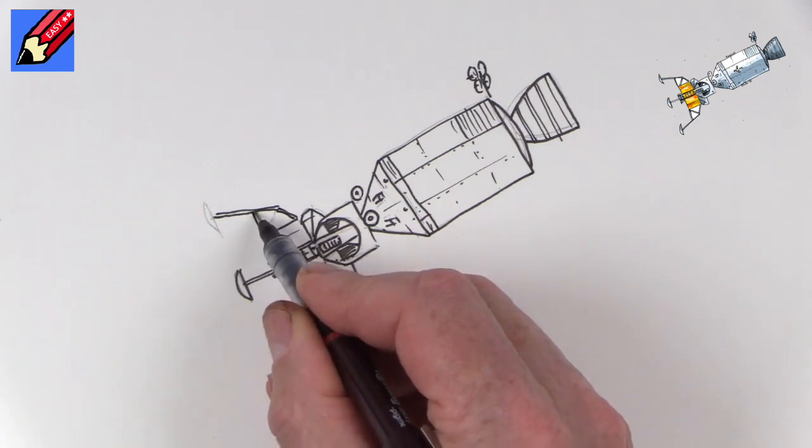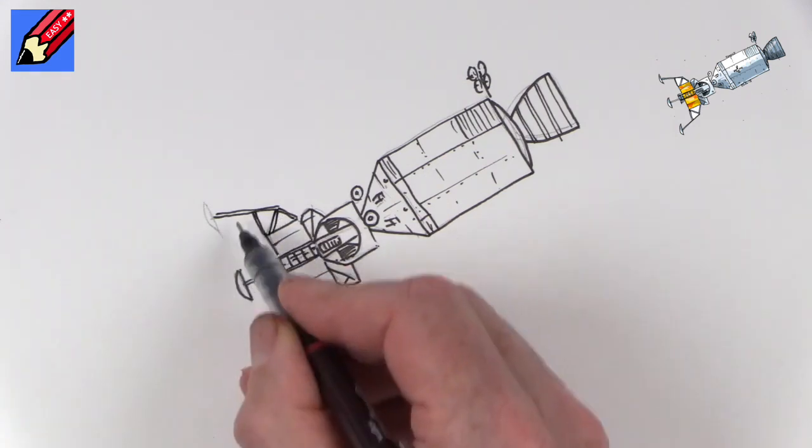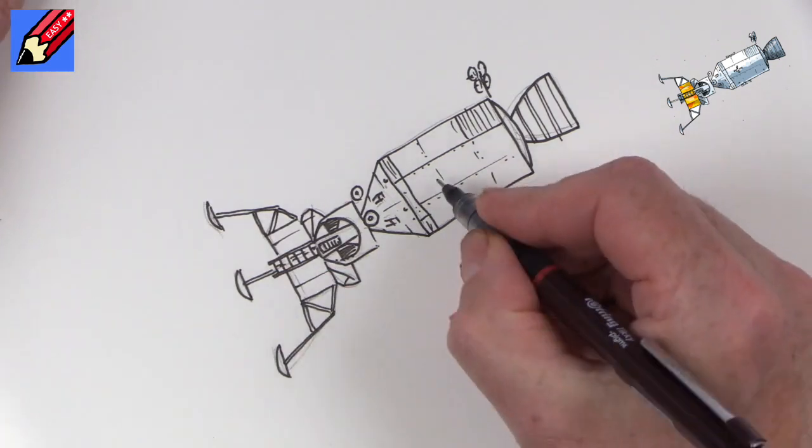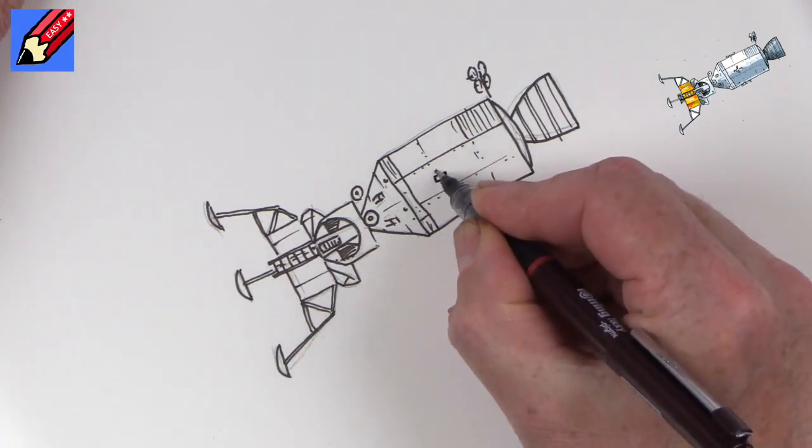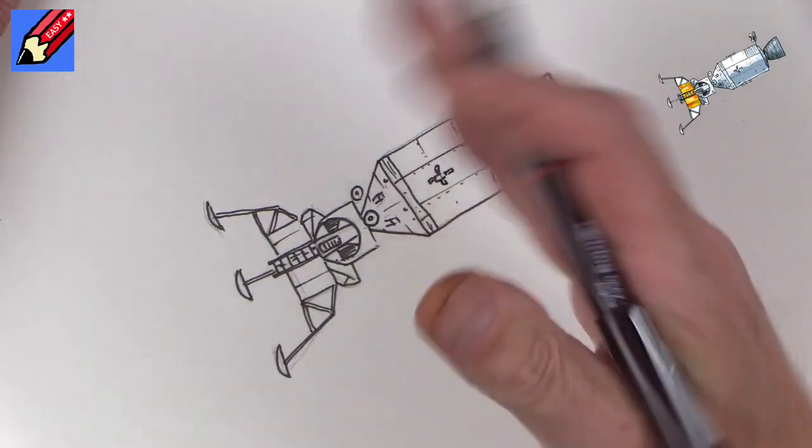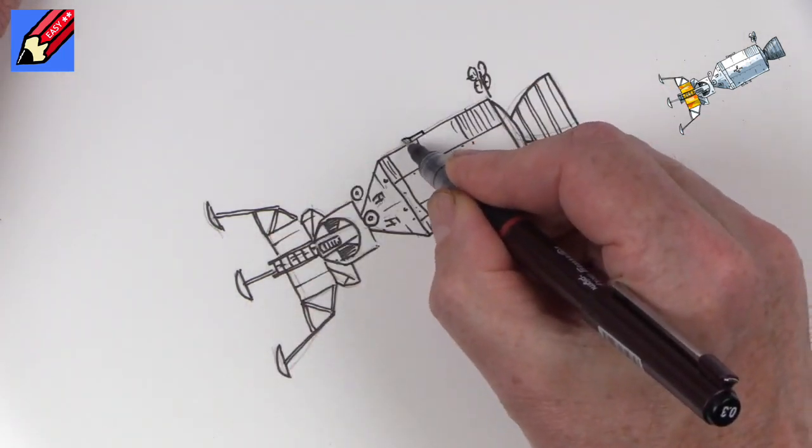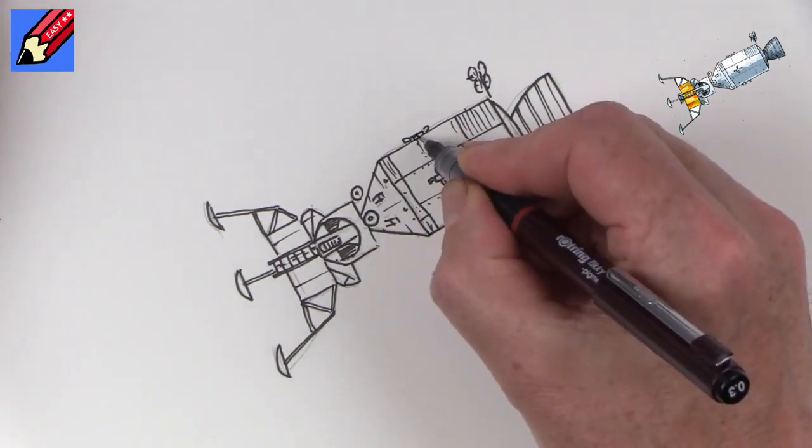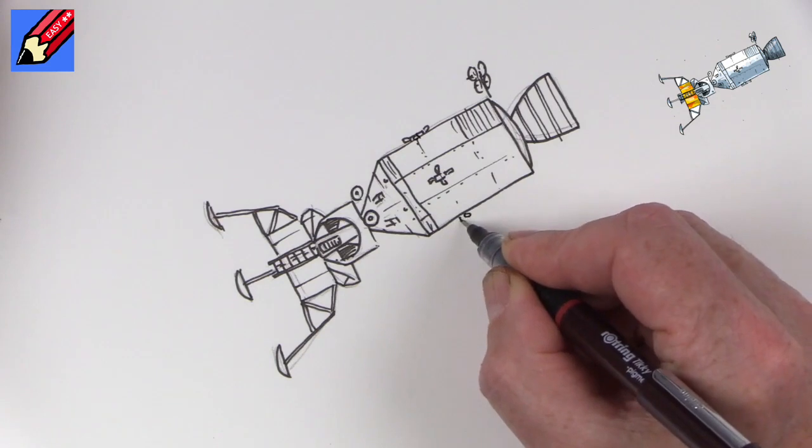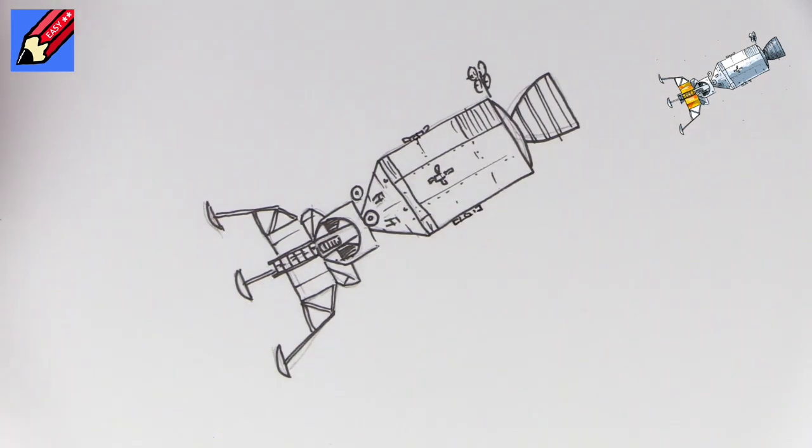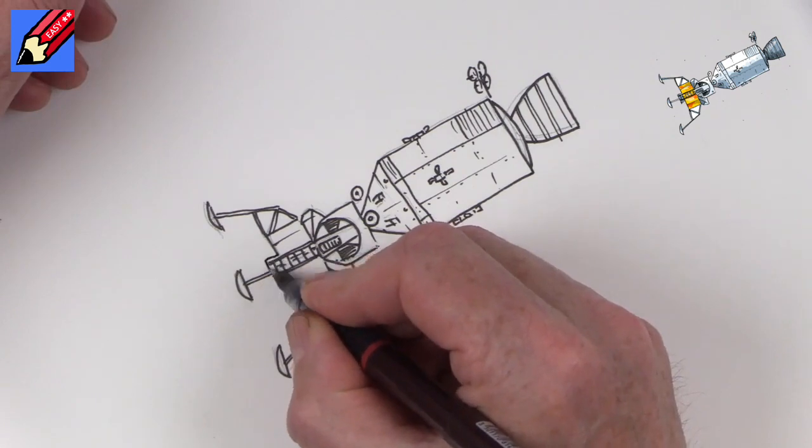Let's do that leg, and then we want these sort of retracting folding sections like that. Now we are also going to want to put in these little thrusters, which allow it to sort of tilt and twist and do all those interesting movements. Little circle there, little circle and a box, and tiny little rocket engines. And then we're going to want to have a little rocket engine underneath there.